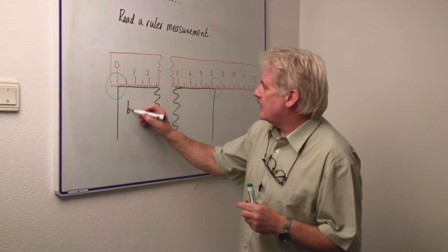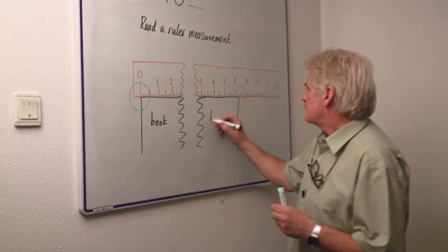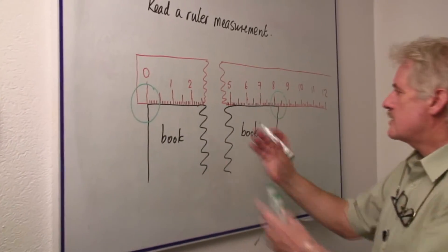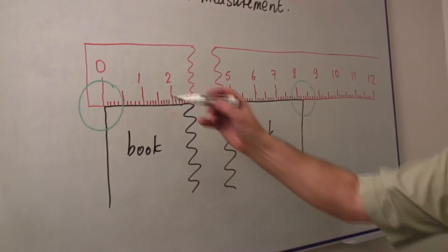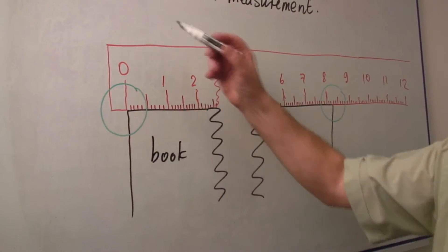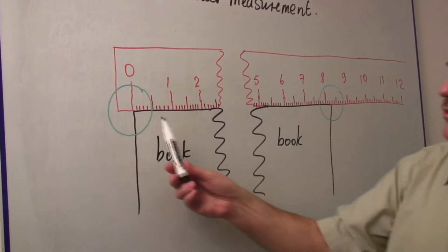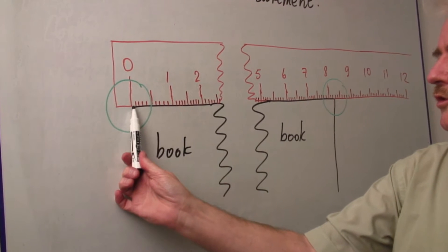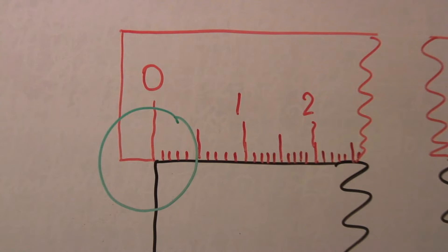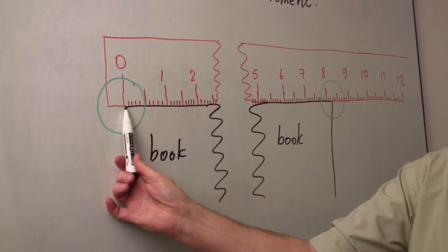I'm giving you an example here. We've got a book, and the book, as you can see, is a certain length. But the most important point is this: if you're going to measure with a ruler, you make sure that the end of your book is exactly in line with the zero on your ruler.